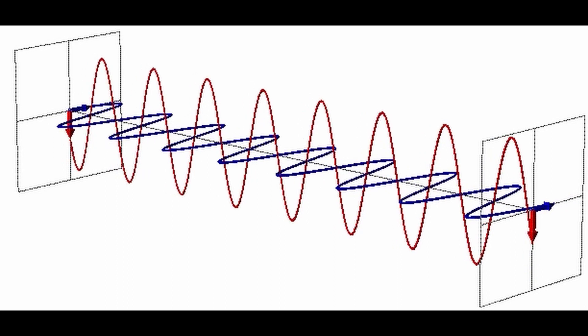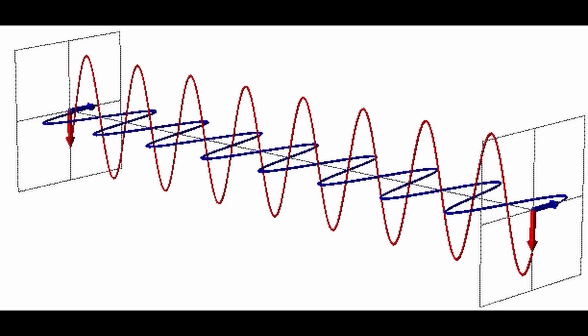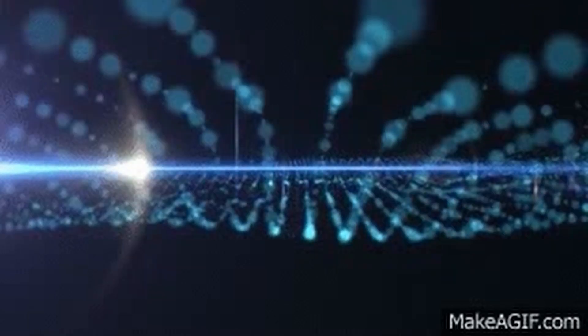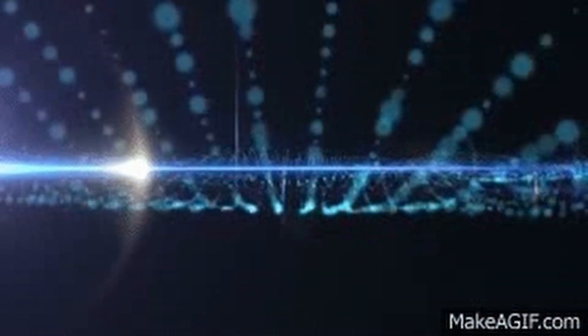The question of how particles acquire mass was a major puzzle in particle physics for many years. The solution was proposed by Peter Higgs and others in the 1960s, who developed the theory of the Higgs field. According to this theory, particles acquire mass through their interaction with the Higgs field, which is a field that permeates all of space. The Higgs field interacts with some particles more strongly than others, leading to different masses. It also plays a crucial role in the mass gap, referring to the sudden increase in mass when a particle transitions from a low energy to a high energy state — a phenomenon first observed in experiments with quarks in the 1970s.